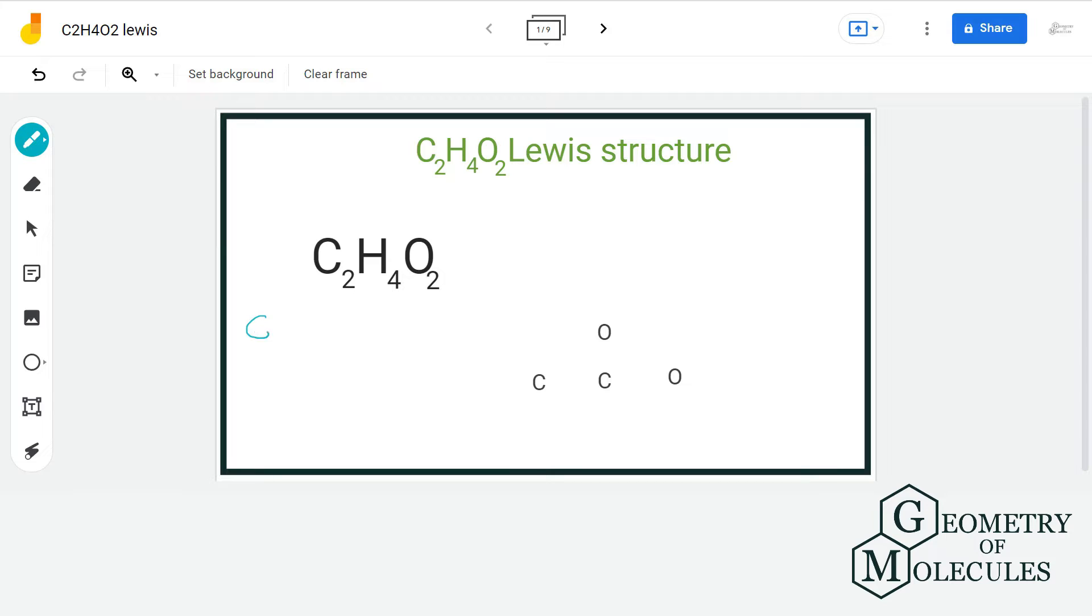There are total of 6 isomers having formula C2H4O2 and we will discuss the Lewis structure of each one of them. For that, let us count the total number of valence electrons. We have 2 carbon atoms having 4 valence electrons, 4 hydrogen atoms having 1 valence electron, and 2 oxygen atoms having 6 valence electrons. That gives us a total of 24.